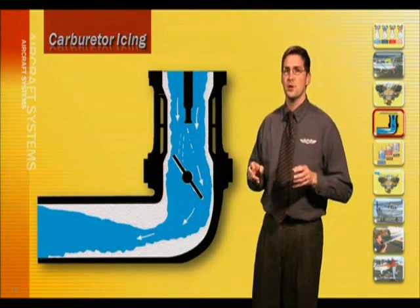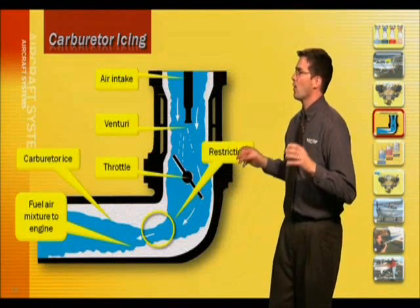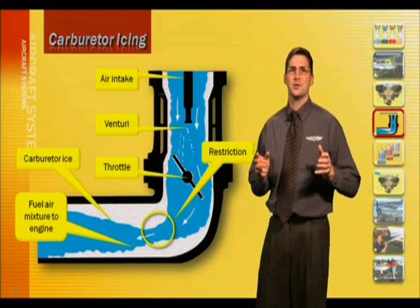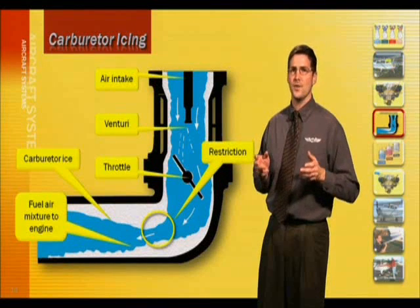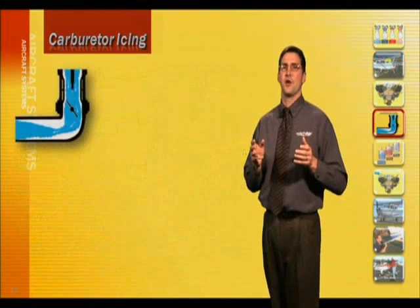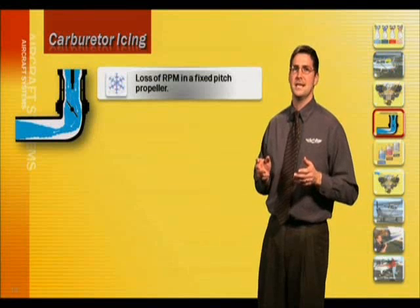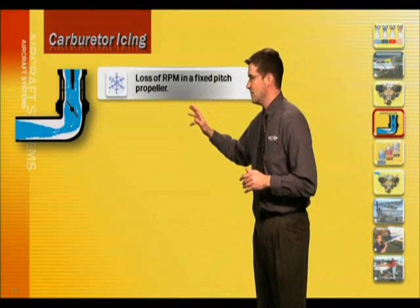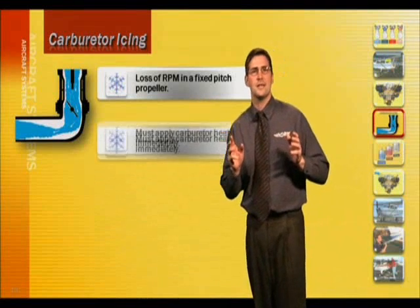You can see the buildup of ice right here in the throat of the carburetor. Carburetor ice is most likely to form when the outside temperature is between 20 and 70 degrees Fahrenheit with high humidity or visible moisture. The first sign of carburetor icing in a fixed-pitch propeller airplane is a loss of engine RPM. If you suspect carburetor icing, apply carburetor heat immediately.